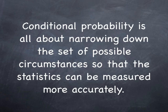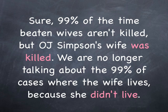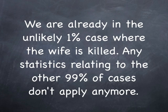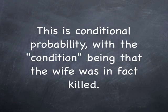Conditional probability is all about narrowing down the set of possible circumstances so that the statistics can be measured more accurately. Sure, 99% of the time beaten wives aren't killed. But O.J. Simpson's wife was killed. We are no longer talking about the 99% of cases where the wife lives, because she didn't live. We are already in the unlikely 1% case where the wife is killed. Any statistics relating to the other 99% of cases don't apply anymore. This is conditional probability, with the condition being that the wife was, in fact, killed.